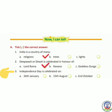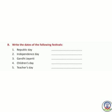Next, Independence Day is celebrated on — Independence Day हम कब मनाते हैं? Independence Day का मतलब है स्वतंत्रता दिवस, जब हमें आजादी मिली थी. Options are 26th January, 15th August, 2nd October. The correct answer is 15th August.